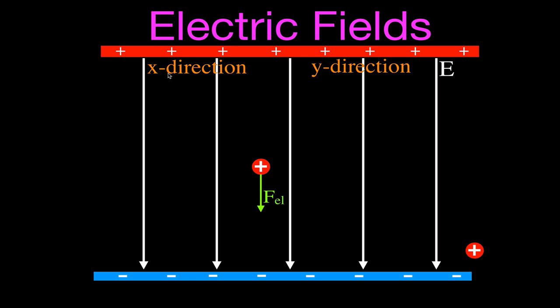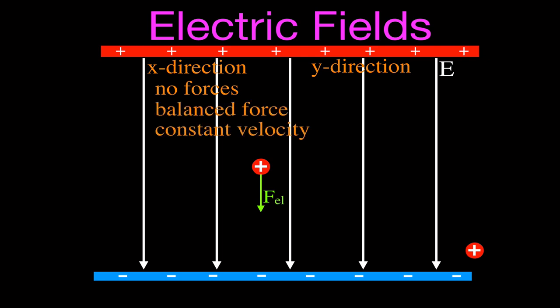In the x direction, there are no forces acting on the electron. Therefore, the forces are balanced, and it's moving at a constant velocity. Most importantly, you need to remember that if it's moving at a constant velocity with balanced forces, then there's no acceleration in the x direction. That means the final velocity in the x direction is going to be equal to the initial velocity in the x direction — the velocity in the x direction doesn't change.